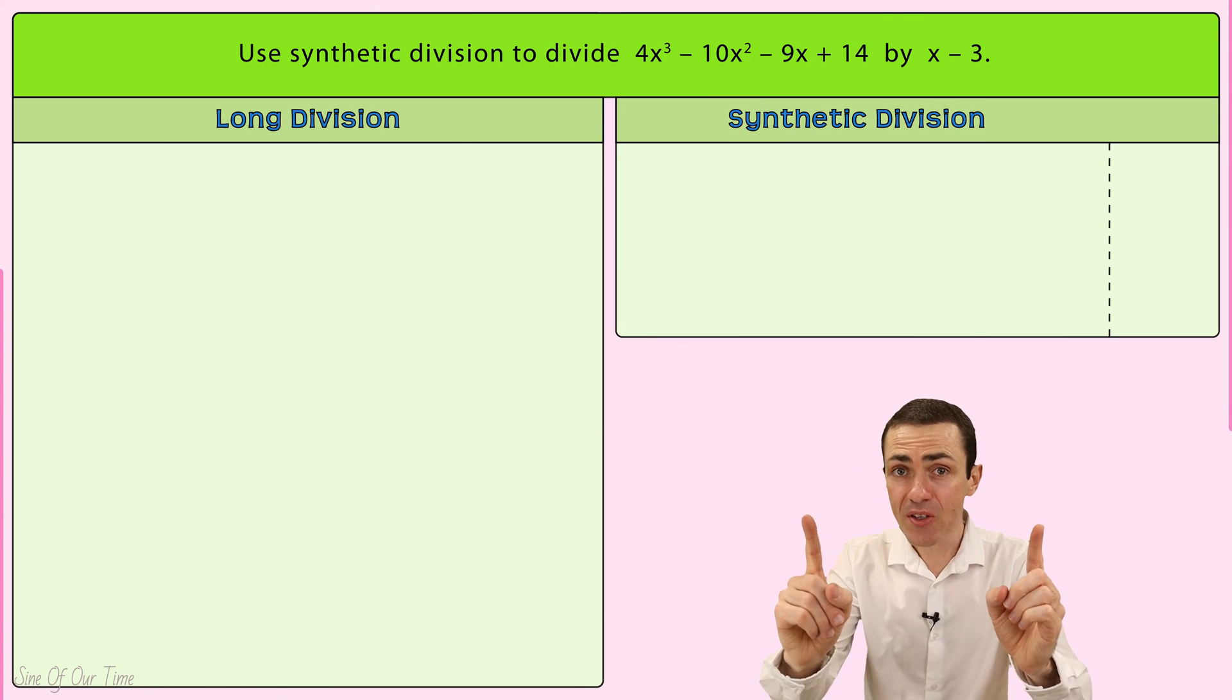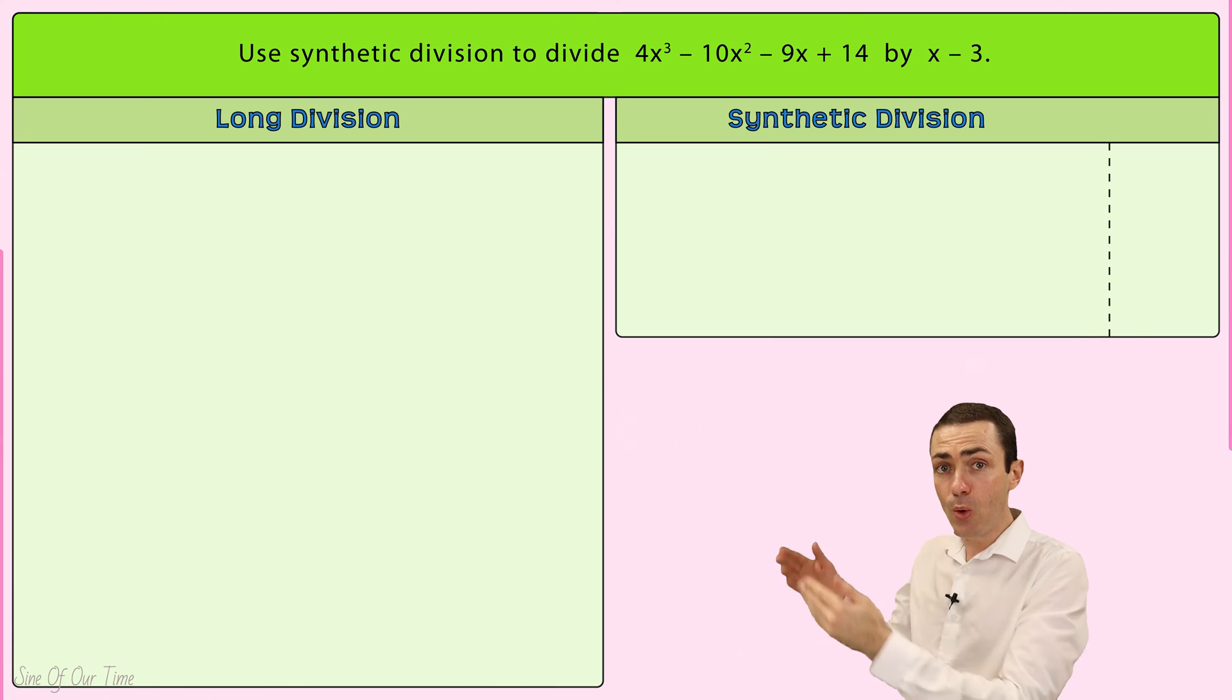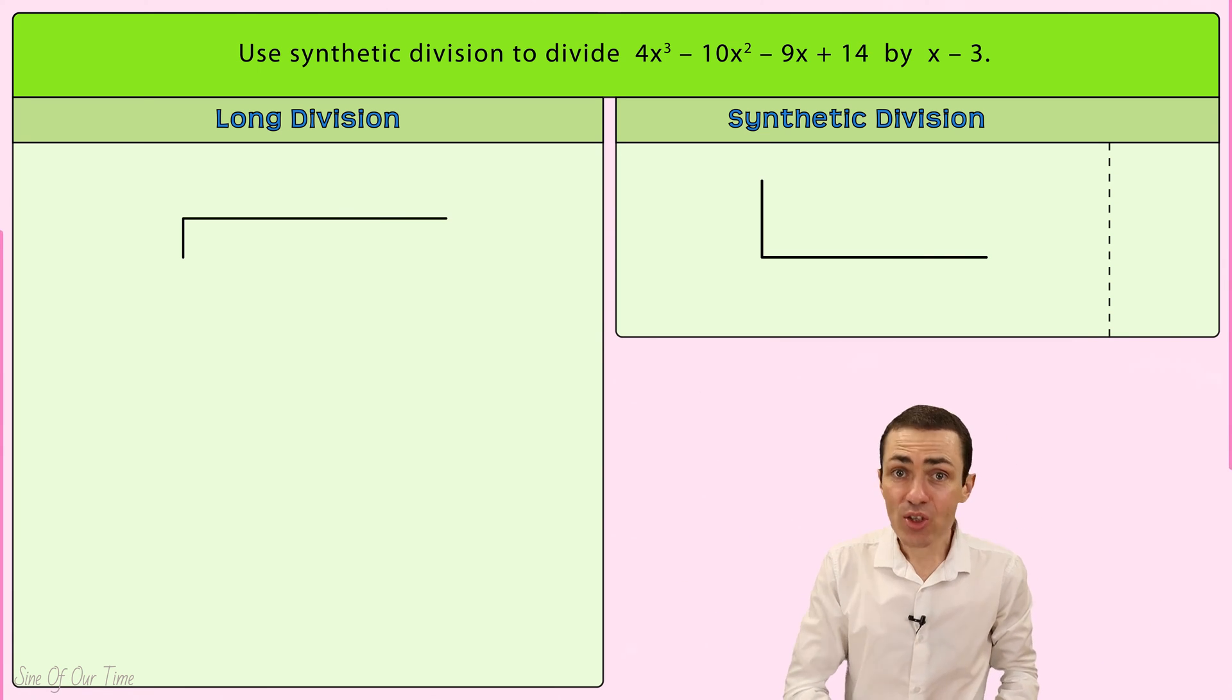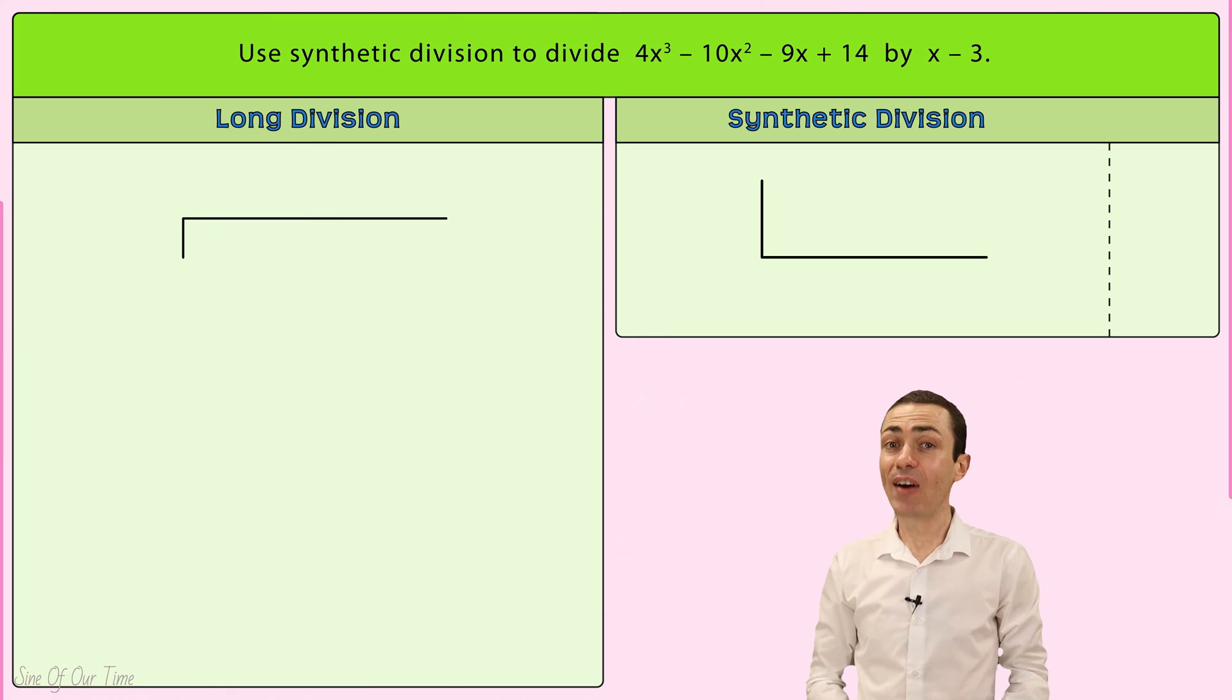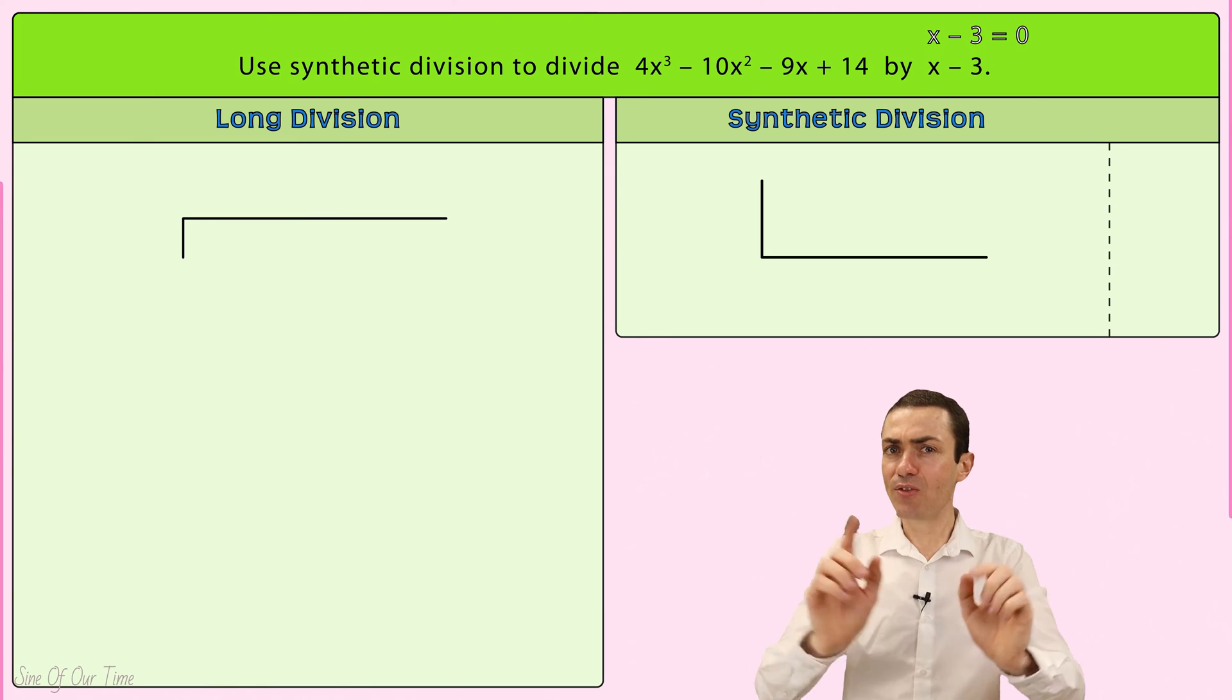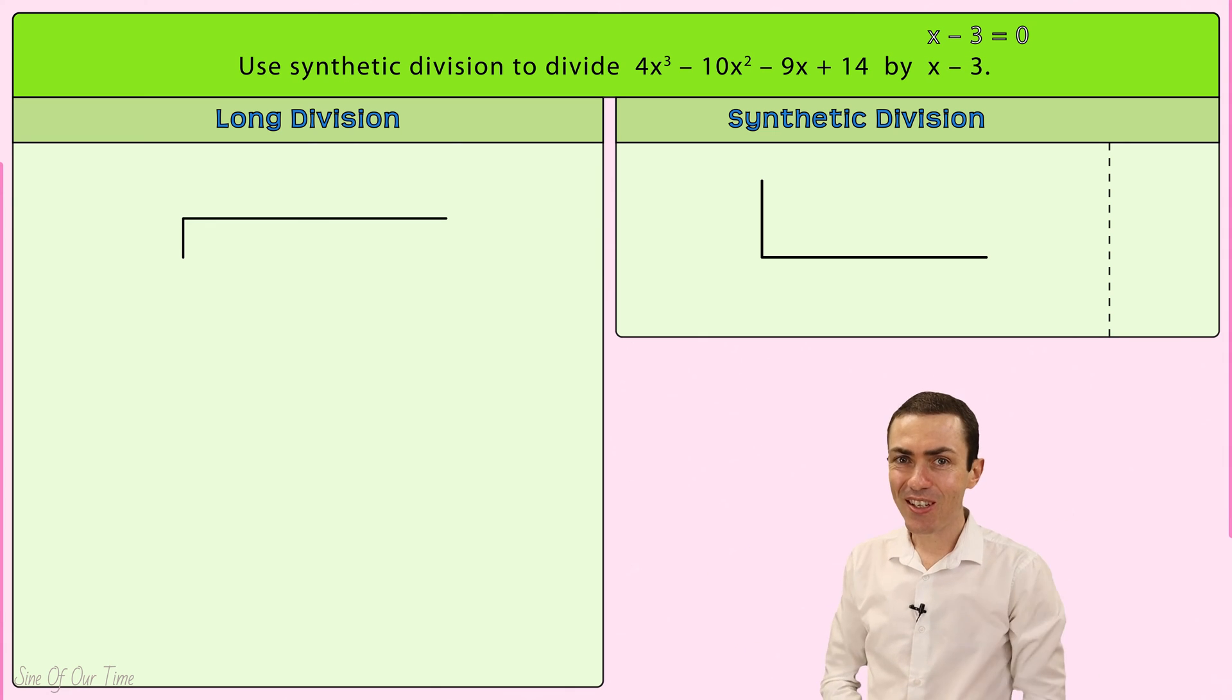The way it works is by starting with a synthetic division symbol, which is in the shape of an L. And then to the left of that synthetic division symbol, we put the value of x that makes the divisor equal to 0, assuming that the divisor is of the form x minus b, which it is in this example.